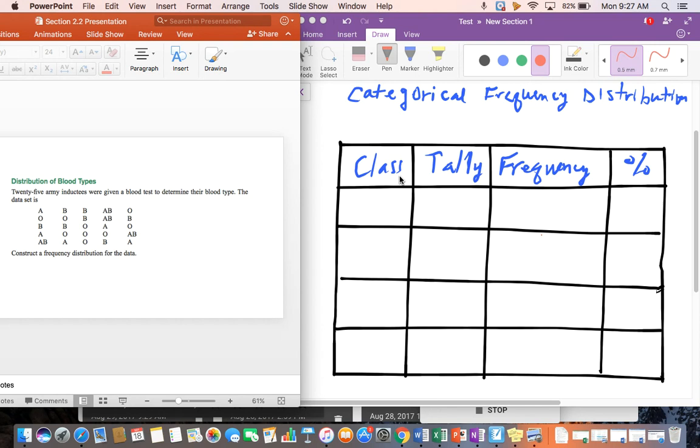The class is going to be all of the different categories that we can have. So in a categorical frequency distribution, it is where our data is nominal or qualitative. So it's not something that we can necessarily rank like we could with if it were dealing with the ages of the richest people in the world. So you see our blood types are A, B, AB, and O. So when we're doing a categorical frequency distribution, we need to create a row for all of the different blood types that we have.